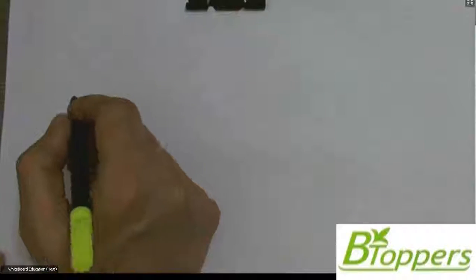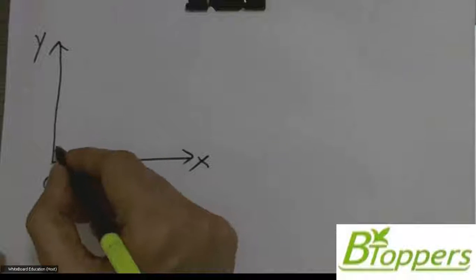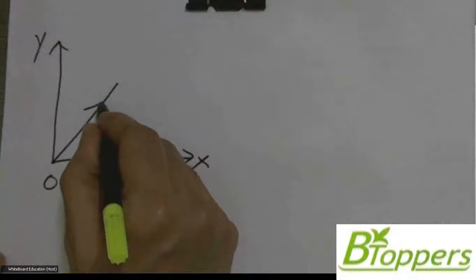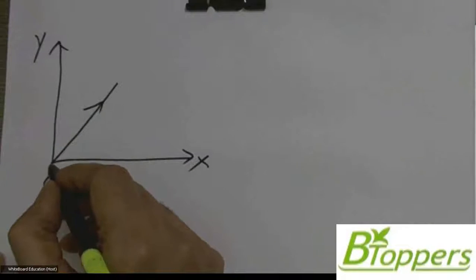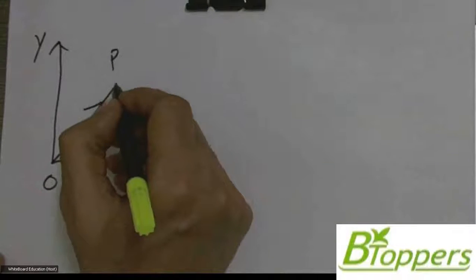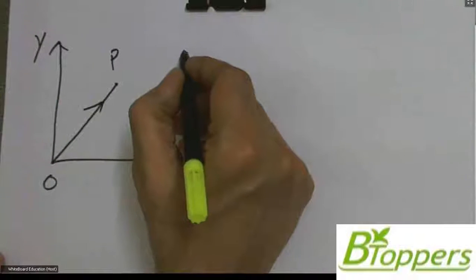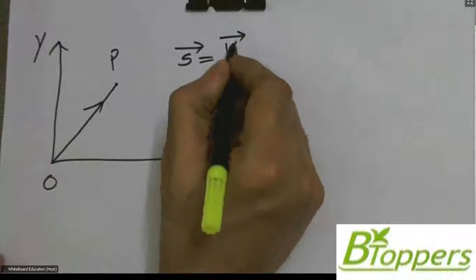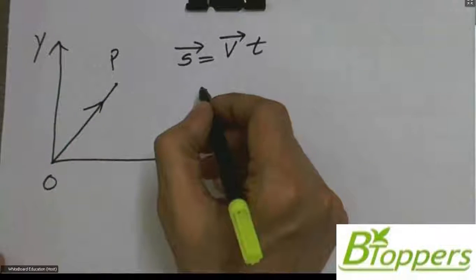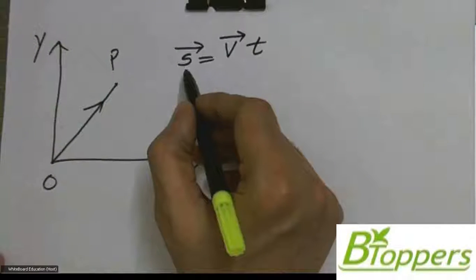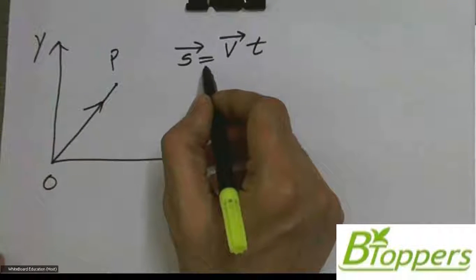Let us consider a particle which moves in the x-y plane with uniform velocity. Let us suppose the origin of the coordinate system coincides with the initial position of the particle. Let P be the position of the particle at time t. The velocity is uniform and there is no acceleration. The displacement of the particle can be written as velocity into time interval: s̄ = v̄ × t.